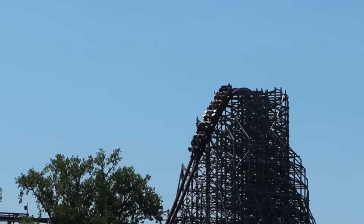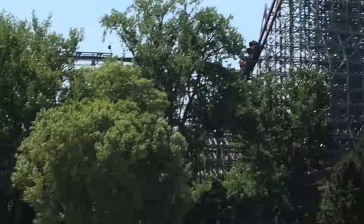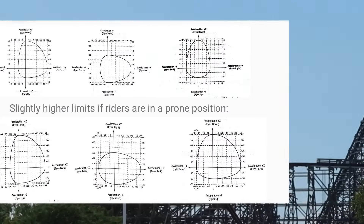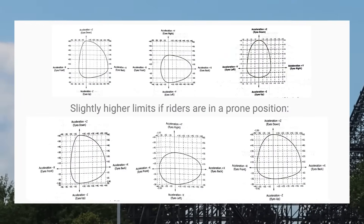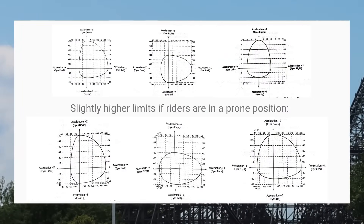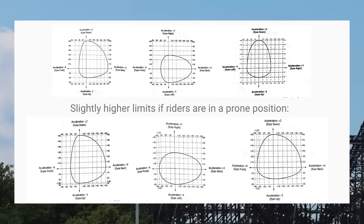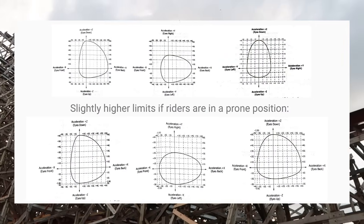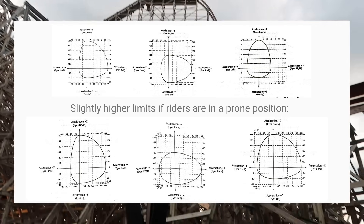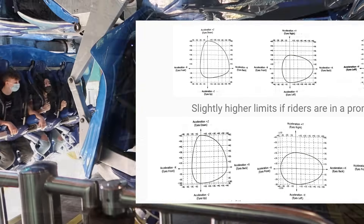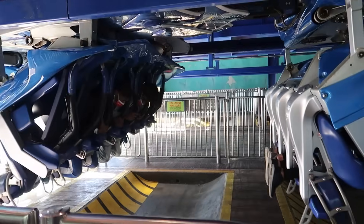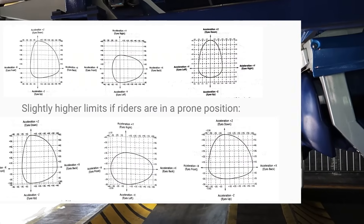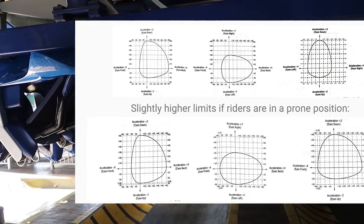Now let's examine g-force limits. These are hard maximums placed on the g-forces rides can exert on riders in specific directions. The limits are slightly increased if riders are in a prone position. Feel free to pause to examine these limits in more detail.